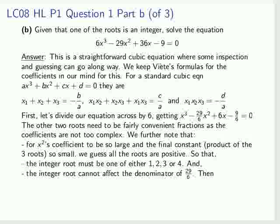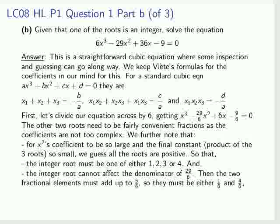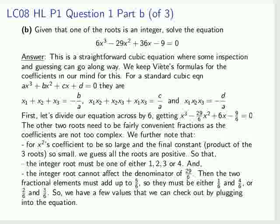We also note that the denominator of 6 on that 29 over 6 cannot be affected by the integer, only by the two fractional roots. So we deduce that the two fractional roots must add up to 5 over 6. That means they must either be 1 over 6 and 4 over 6, or 2 over 6 and 3 over 6. We have a few values.